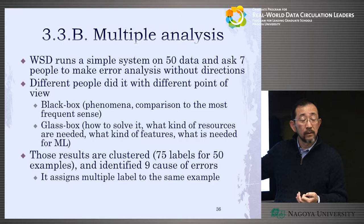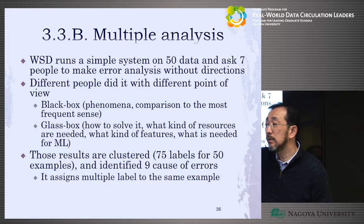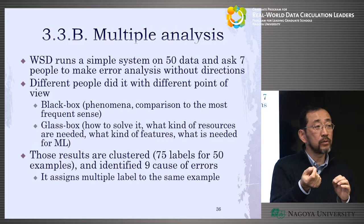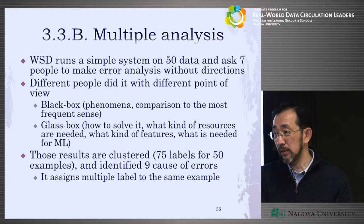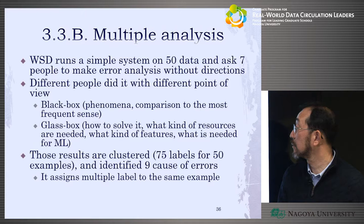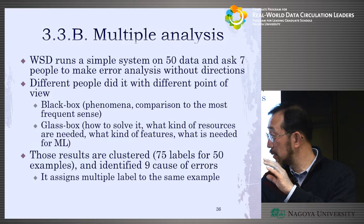The results were completely different. Some people did black box analysis, categorizing errors based on phenomena, or compared to the most frequent sense. In word sense disambiguation, if you always select the most popular sense — for example, the financial institute meaning of 'bank' — you might get 60% accuracy. Then the analysis focuses on why the system makes different or incorrect answers.